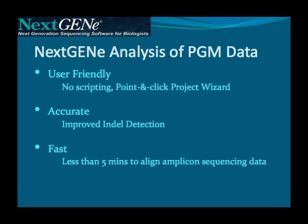Additionally, the data processing is fast, using multiple processing cores, so that alignment of amplicon sequencing data from IonTorrent takes less than five minutes. Larger data sets can also be aligned quickly to whole large genomes, such as the entire human genome, with processing times varying between projects. Most data sets can be aligned within a few hours.